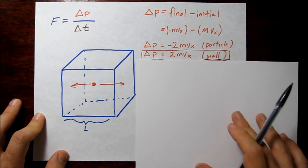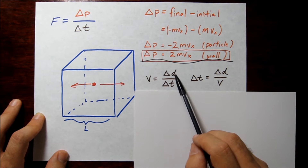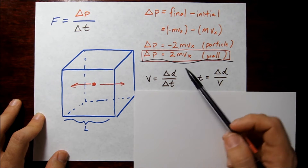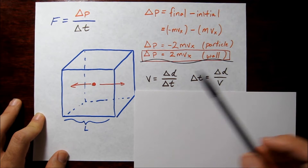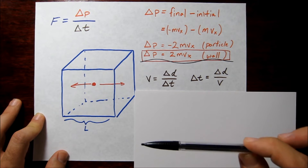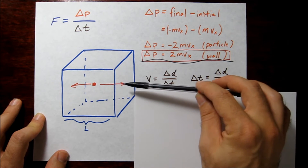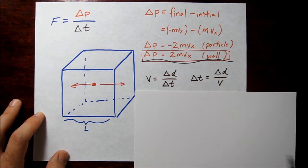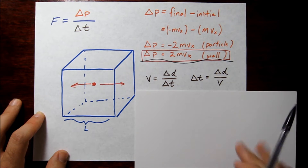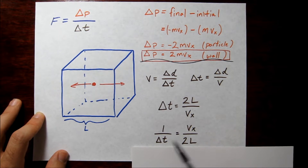Now let's solve for the denominator delta t. Delta t comes from velocity equals change in distance over change in time, rearranged to delta t equals change in distance over velocity. The change in distance is the distance between successive collisions with the same wall. This is a cube with all sides of length L. The particle travels L across and L back, so the total distance is 2L. Therefore delta t equals 2L over v_x, and 1 over delta t equals v_x over 2L.